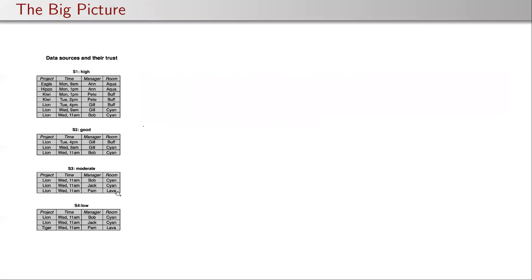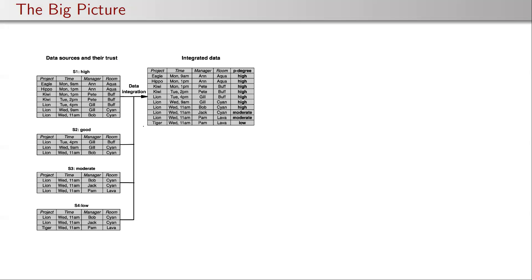Suppose you have different data sources with different levels of trust associated to them — for example, from different websites with different authority. When we integrate these data, we assign possibility degrees which form a linear chain from low, moderate, to high. We look at tuples and assign the highest level of trust based on the highest trusted source, so in this case it would be moderate.